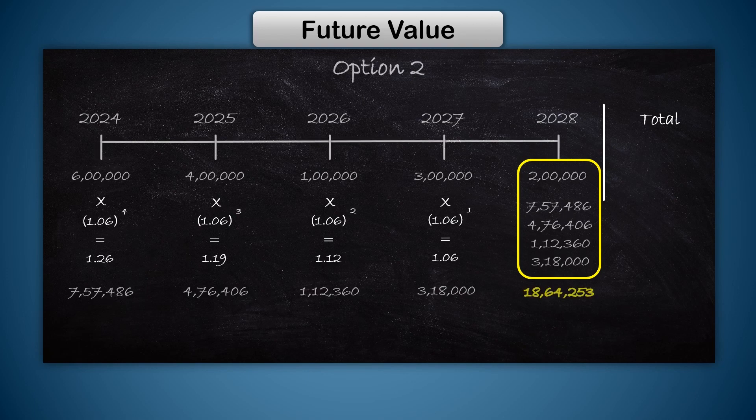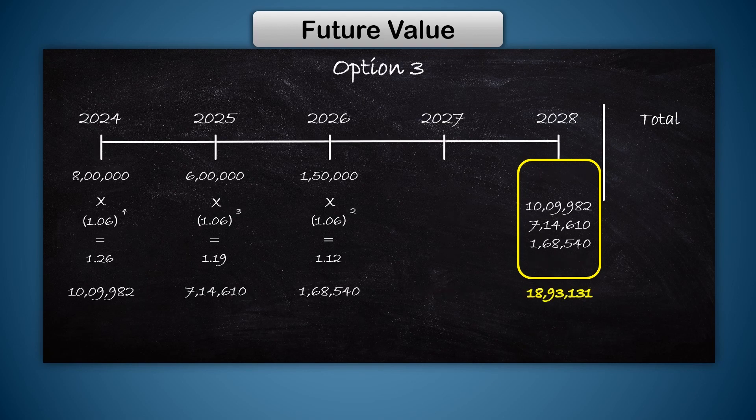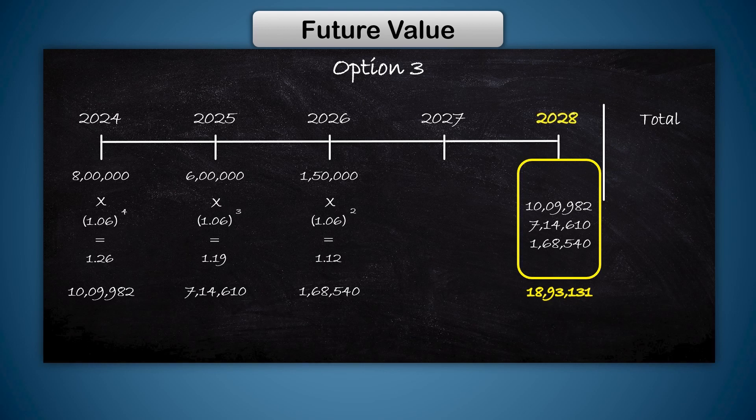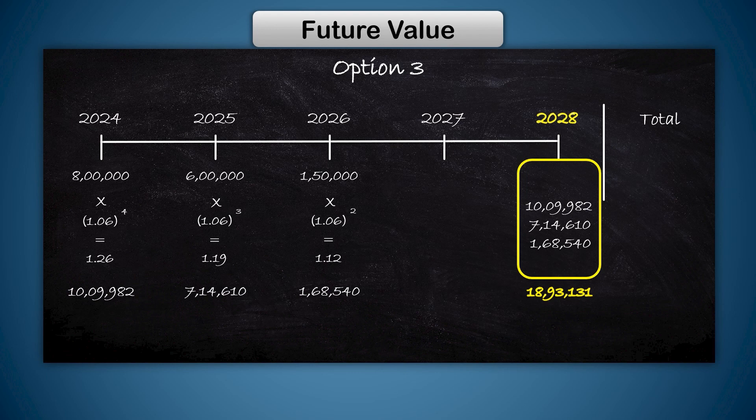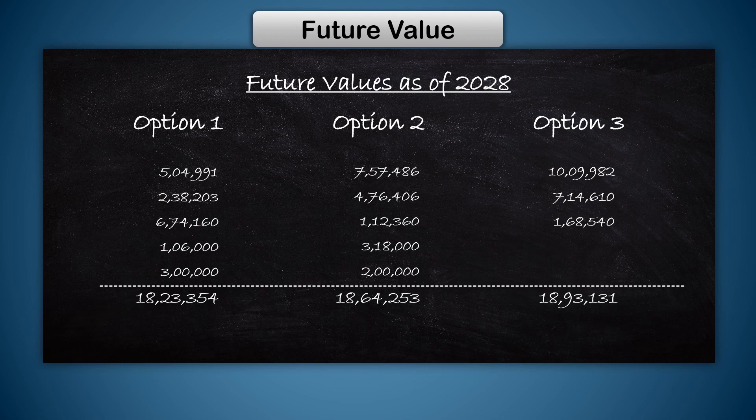If I evaluate option two, I will get 18 lakh 64,000. For option three, I will get 18 lakh 93,000. For option three also, you have to calculate future value till 2028, even though the cash flow ends in 2026. If we calculate future value only till 2026, that will not be comparable with the earlier values. Now that all amounts are of 2028, we can compare them, and clearly option three is better.